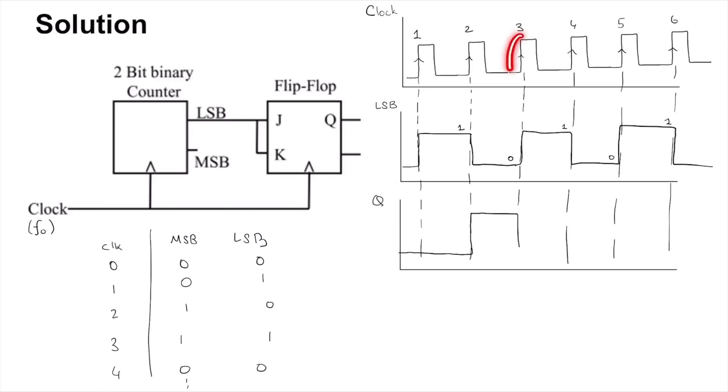Again for this clock edge the value just before the clock edge is 0 and so it continues. And for this clock edge the value just before the clock edge is 1 and so it will have a dip.